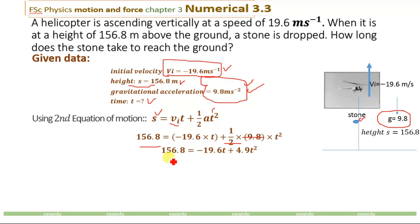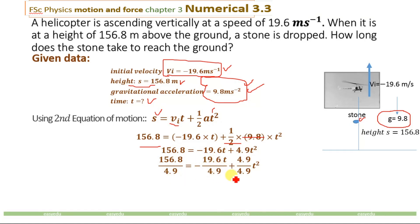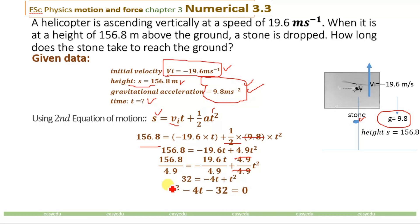Now we will divide this whole equation by 4.9. Dividing the whole equation by 4.9: 156.8 divided by 4.9 gives 32, minus 19.6t divided by 4.9 gives minus 4t, and 4.9 divided by 4.9 cancels to give t². So we have 32 = minus 4t + t². Rearranging this equation and shifting 32 to the other side, we will have t² minus 4t minus 32 = 0.